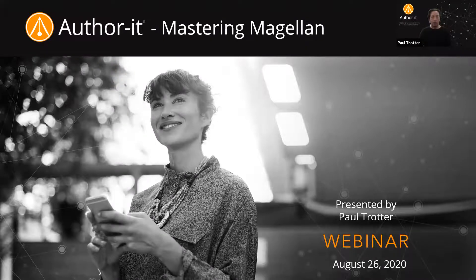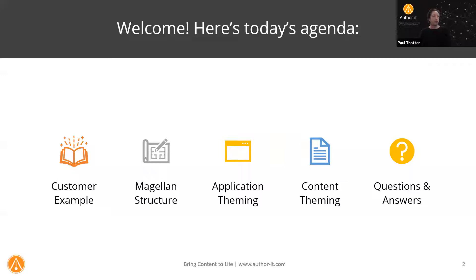Let's take a quick look at our agenda today. We're going to first start off by looking at an example theme created by one of our customers, who has done a great job with both basic theming from our last webinar and some advanced theming. We'll take a detailed look at the structure of the Magellan application and how that relates to CSS, then go through application theming and content theming, and finish off with questions and answers.